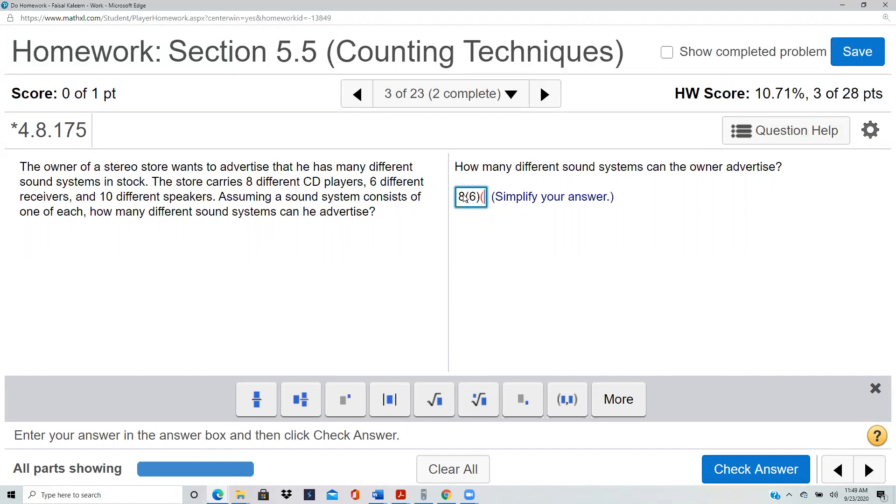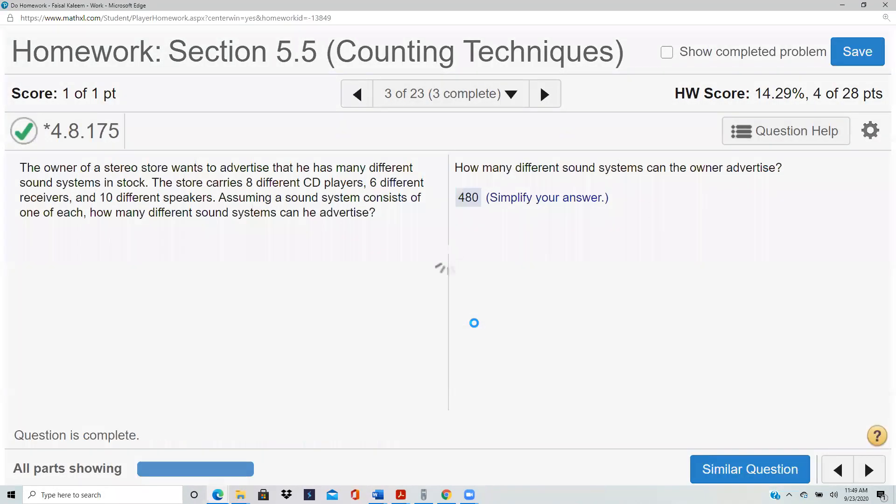So you multiply the three, and that's eight times six is 48, so that'd be 480.